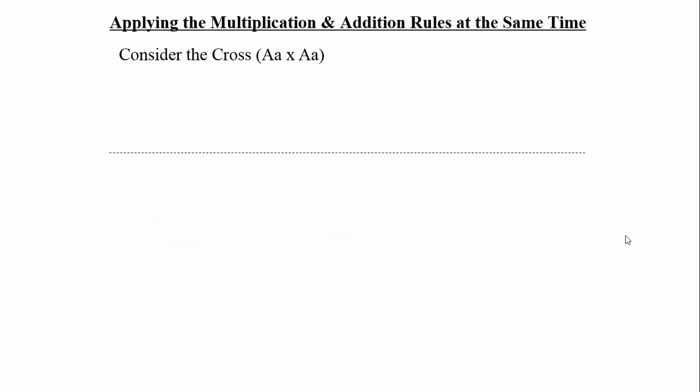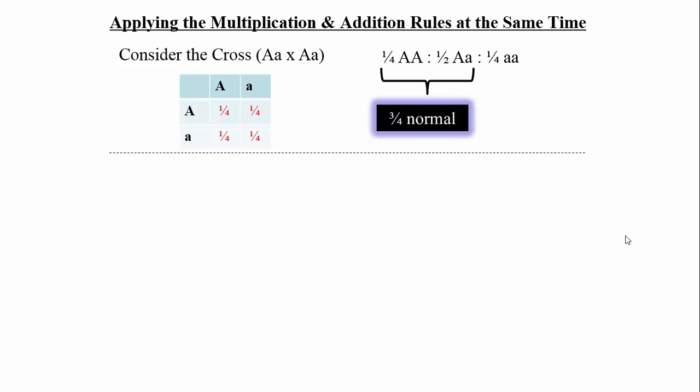Now let's apply the multiplication and addition rules simultaneously — a slightly more advanced genetics problem. We're crossing two heterozygotes for albinism, where big A encodes for normal pigmentation, little a encodes for albino, and big A is dominant. From the Punnett square, three-quarters of offspring will have normal pigmentation (at least one big A), and one-quarter will be albino.